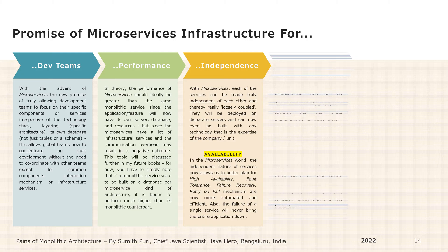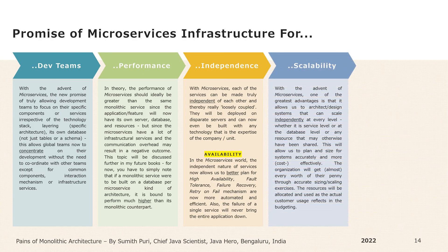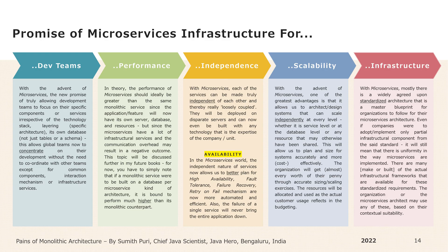With the advent of microservices, one of the greatest advantages is that it allows us to architect and design systems that can scale independently at every level, whether at the database level or any resource that might otherwise have been shared. This will allow us to plan and size for systems accurately and more cost-effectively. Asymmetric scalability can be achieved by allocating the required resources such as CPU, memory and disk depending on the specific requirement of that feature or component. With microservices, there is a widely agreed-upon standardized architecture — a master blueprint for organizations to follow — and even partial adoption of infrastructural components will mean a uniform thought process in the way microservices are implemented.